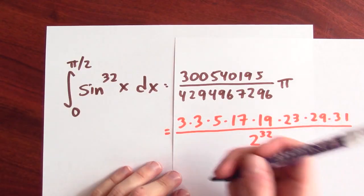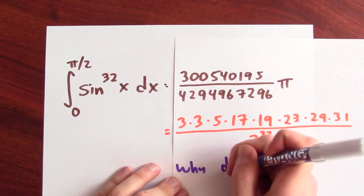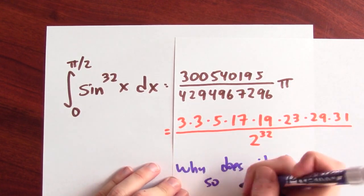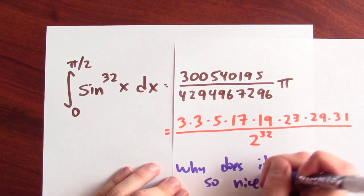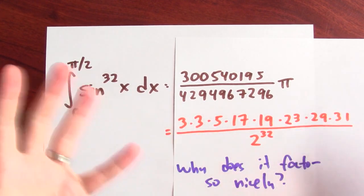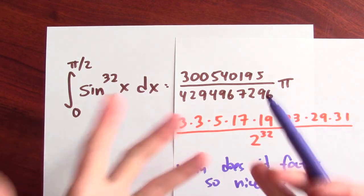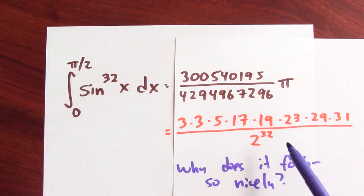Specifically, a question is: why does it factor so nicely? There's no reason, at least at this point, for it to work out so nicely. To gain some insight into this, let's use parts to examine the relationship between the integral of sine to the nth power and sine to the n minus second power.